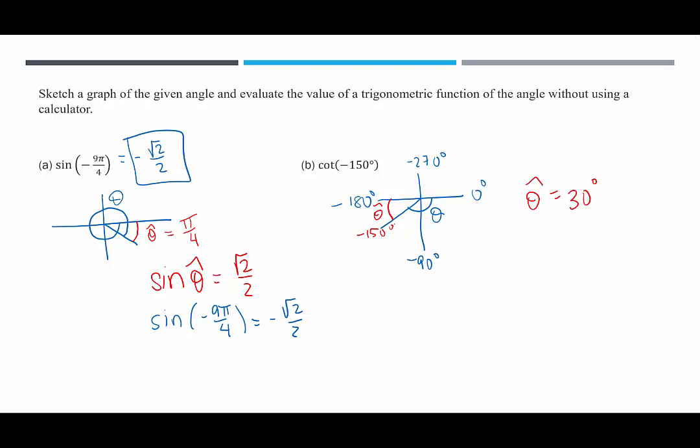We're in quadrant 3, and we are evaluating cotangent. Cotangent has the same sign as tangent. And in quadrant 3, tangent is positive. So cotangent of negative 150 degrees will equal exactly what cotangent of 30 degrees is. What is cotangent of 30 degrees?